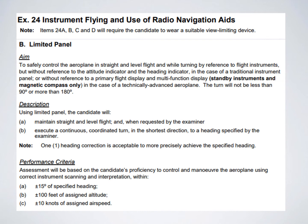You're not going to be required to show this on a private pilot check ride, but you are required to demonstrate this proficiency on your commercial level check ride. Under Exercise 24 — instrument flying — we'll cover radio navigation aids in another video. For the limited panel, the examiner wants to know you can control the aircraft without reference to the attitude indicator and heading indicator, using standby instruments and magnetic compass only.